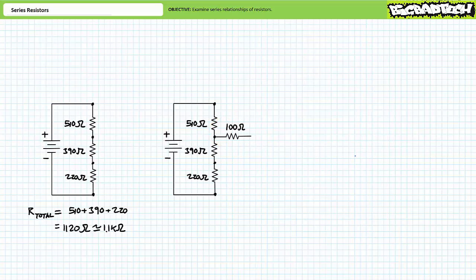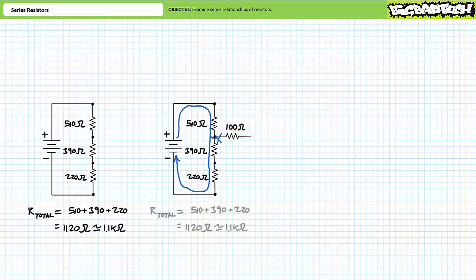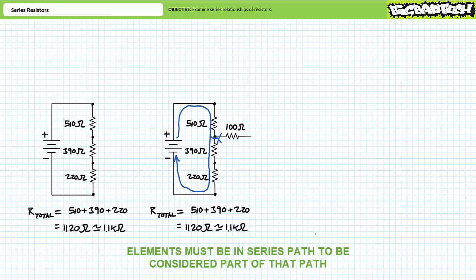To answer this, think about how current travels through the circuit. Any source current leaving the positive terminal must travel through the 510 ohm resistor, through the 390 ohm resistor, and through the 220 ohm resistor to reach the negative terminal — implying no current travels through the 100 ohm resistor dangling in space. The source still sees the series combination of 510, 390, and 220 ohms for a total of 1120 ohms, or roughly 1.1 kilo-ohms. Resistors must be in the single path to be considered part of a series circuit.